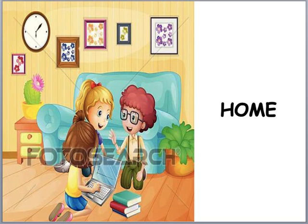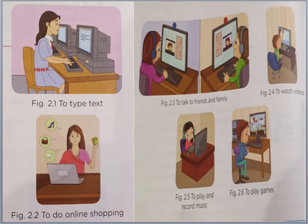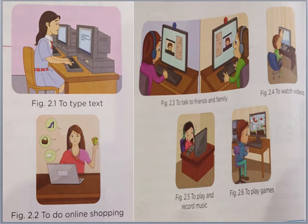Home is the first place where students start their life. Computers ghar pe kaise use hote hain? First, to type text — koi bhi assignment agar bachche ko school se milta hai, so computers are very helpful in completing their assignments. Second, to do online shopping — online shopping ke liye bhi computers aaj kal bahut zyada famous hain. Agar koi person ek jagah pe hai aur usko kisi or ki cheez mangani hai, so with the help of computer he can do online shopping and get it delivered to his doorstep.